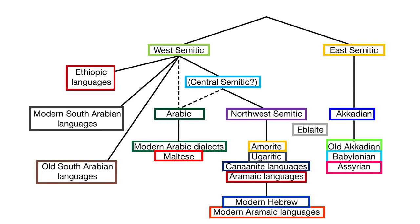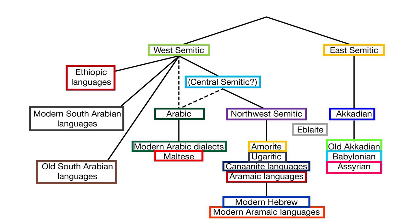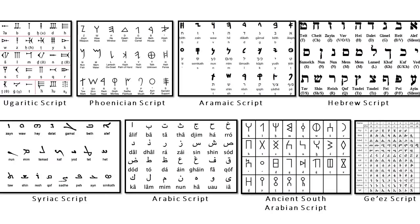The terminology was first used in the 1780s by members of the Göttingen School of History, who derived the name from Shem, one of the three sons of Noah, in the book of Genesis.